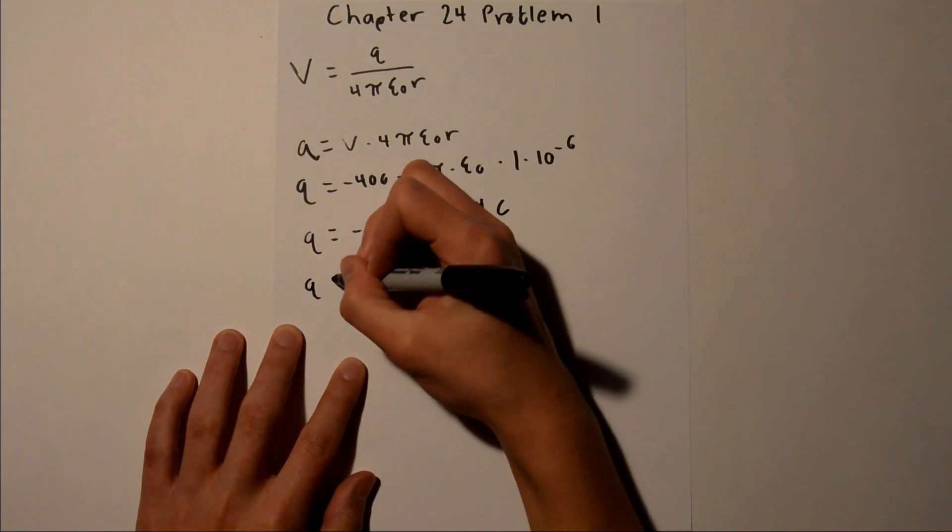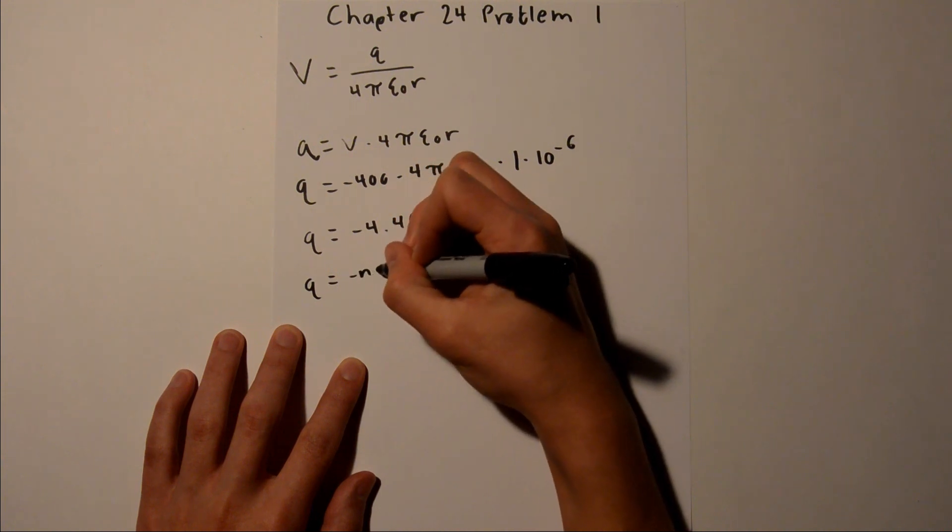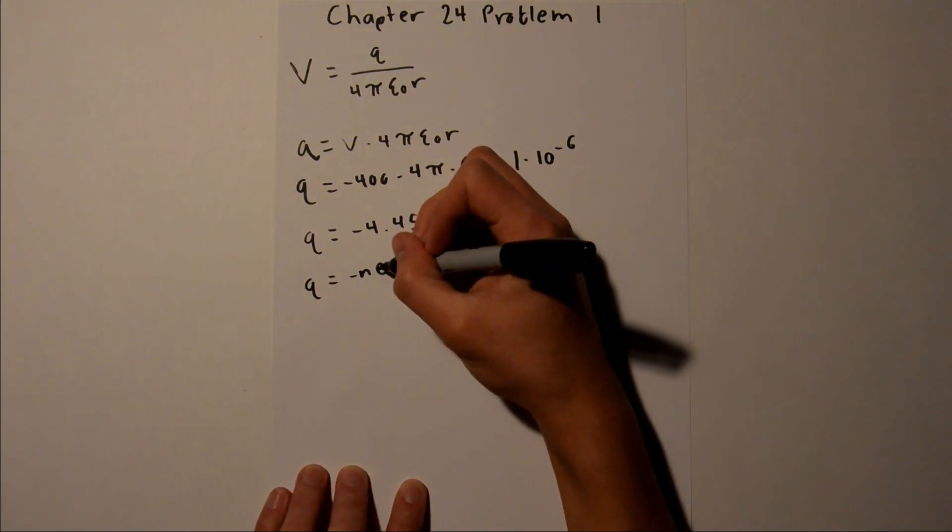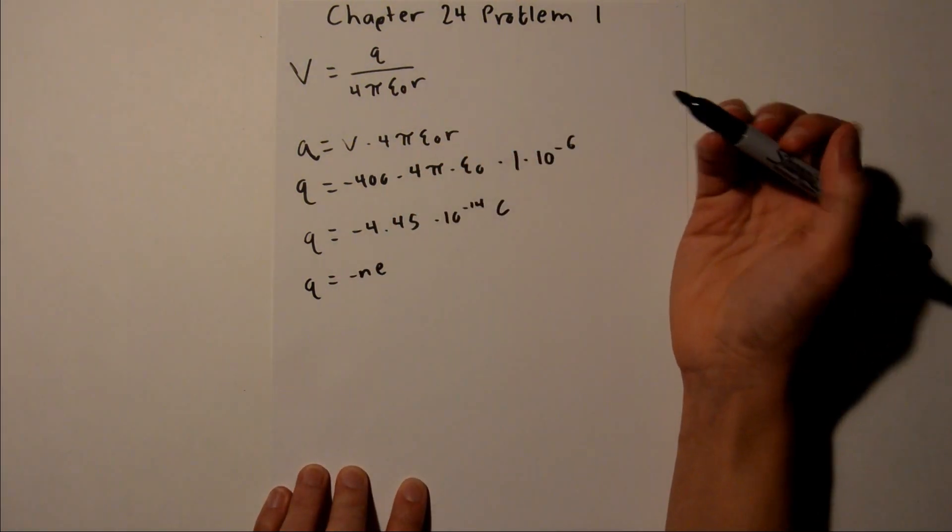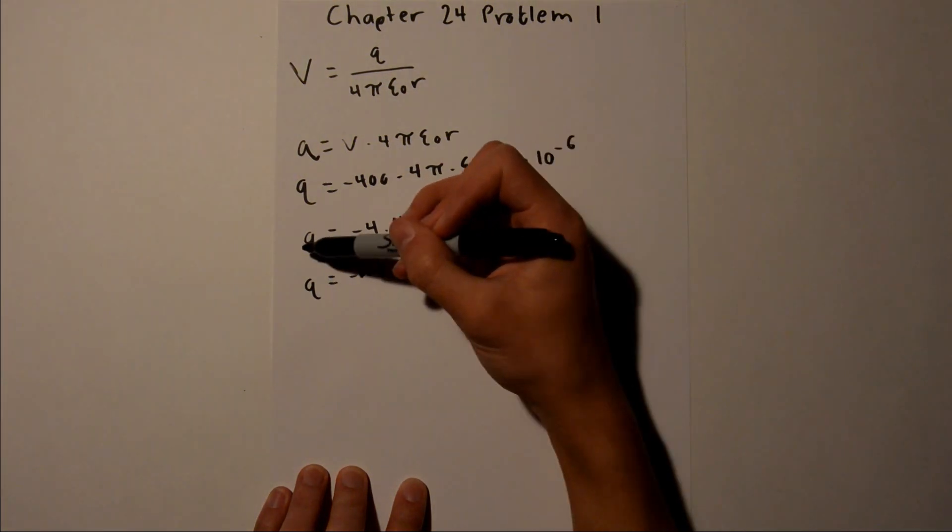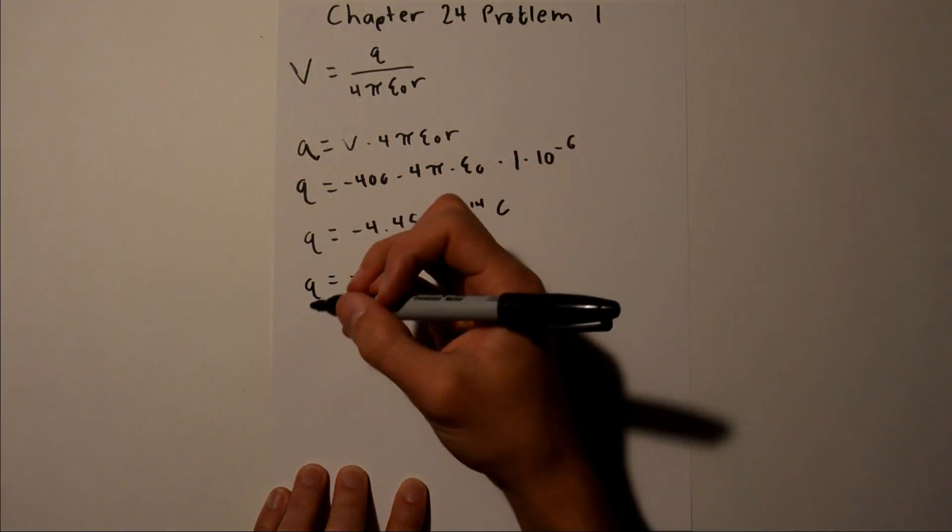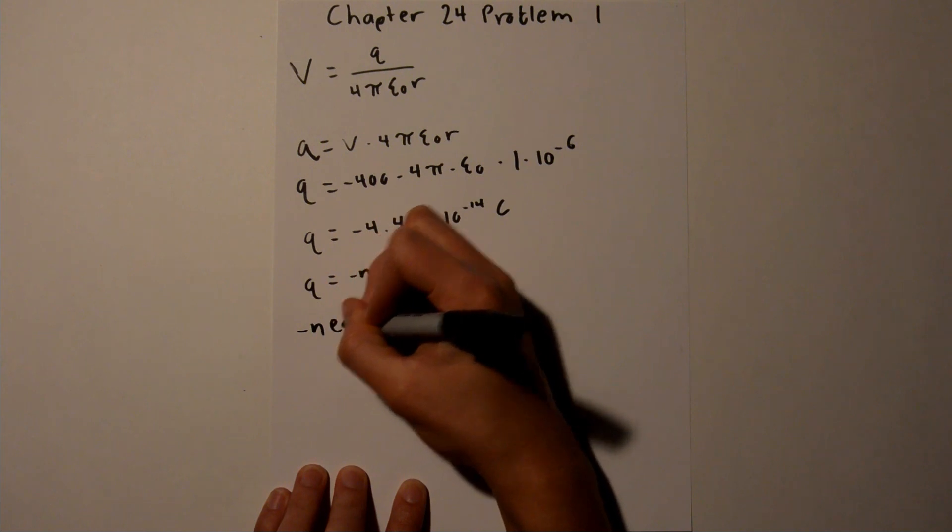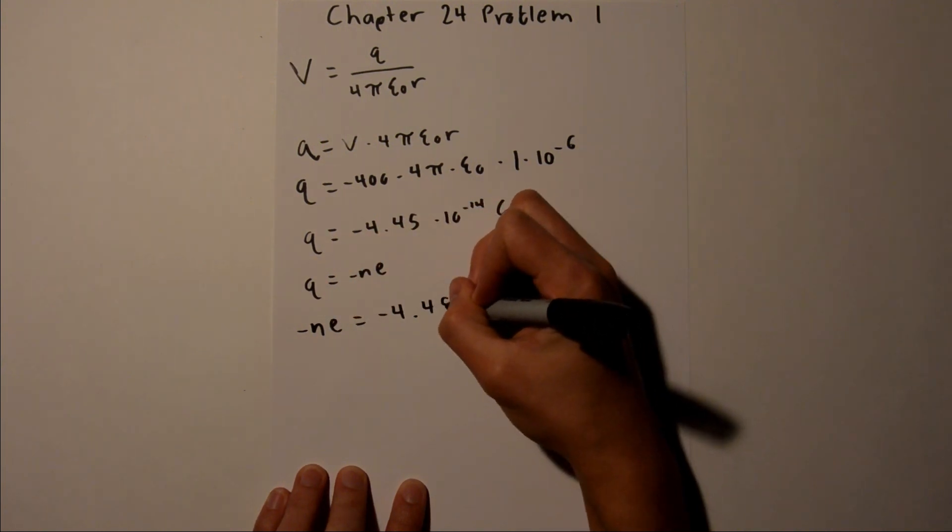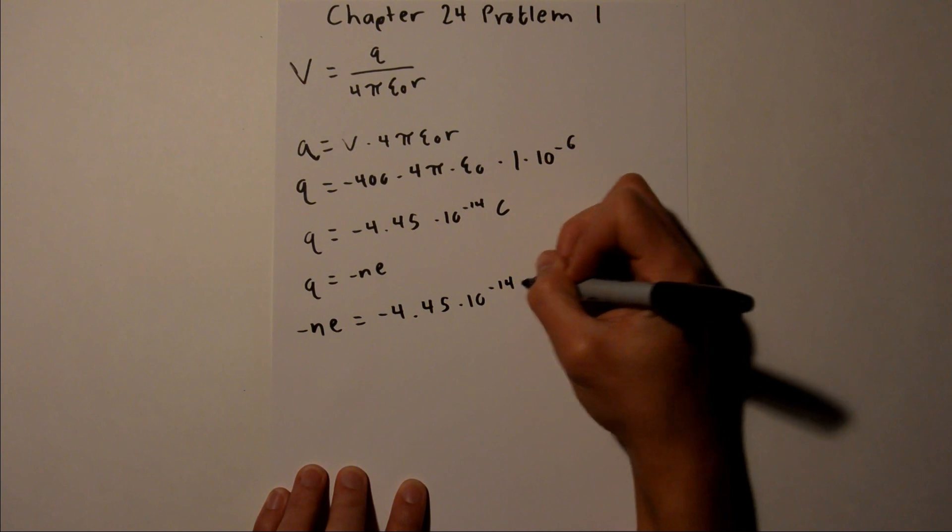And we also know that Q is equal to negative Ne, where N is the number of electrons and E is the charge of an electron. And since these two expressions are both equal to Q, we can set them equal to each other, and say negative Ne equals negative 4.45 times 10 to the negative 14.